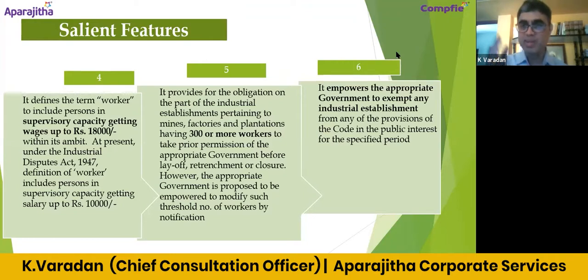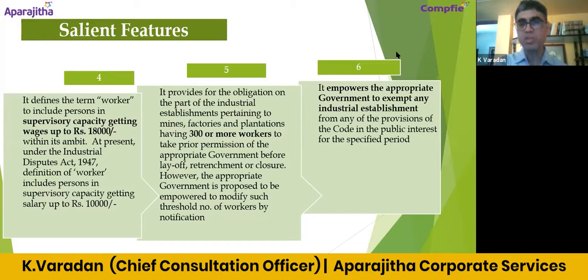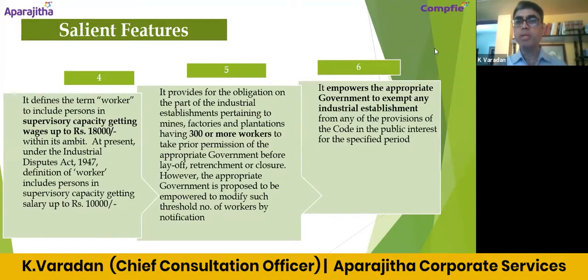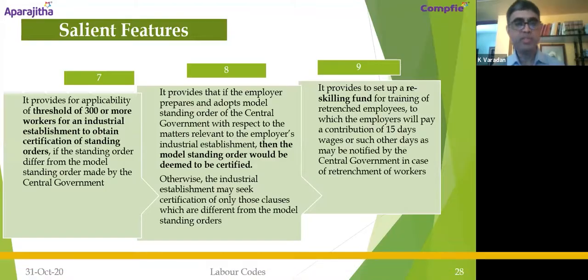The current Chapter 5B is now coming under Chapter 10. Instead of 100, the threshold limit is being increased to 300. So industrial establishments in mines, factories, or plantations with more than 300 workers will need to take permission if they resort to layoff, retrenchment, or closure. The code also empowers the appropriate government to exempt any industrial establishments from any of its provisions in the public interest for a specified period.